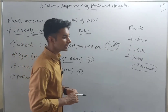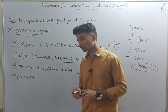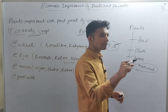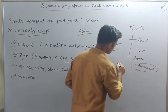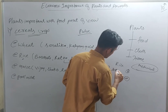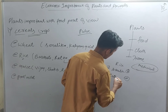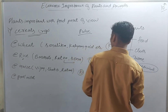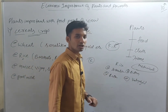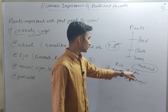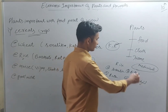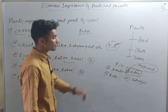In exams, questions are asked about varieties of rice and maize. For example, an MCQ may ask: which of the following is a variety of rice? The options might include Sona, Ratan, Ratna, and Kaliyan Sona. Here, Ratna is the correct answer as a variety of rice, Ratan is a variety of maize, and Kaliyan Sona is a variety of wheat. So option B — Ratna — would be correct.